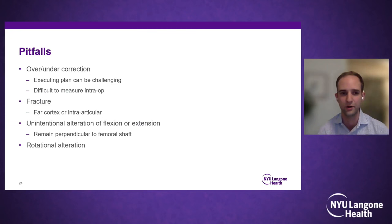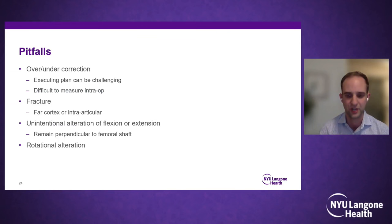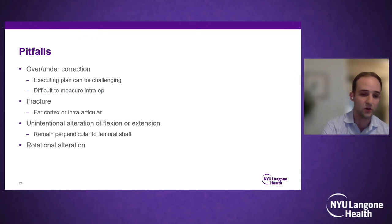Pitfalls of distal femoral osteotomy are similar to HTO and generally include undercorrection. It can be difficult intraoperatively to execute your plan, and measuring the correction can be difficult, especially in obese patients or those with joint laxity. Fracture of the far cortex or intra-articular extension is also a risk, as are inadvertent flexion/extension of the distal femoral component and rotational alterations.